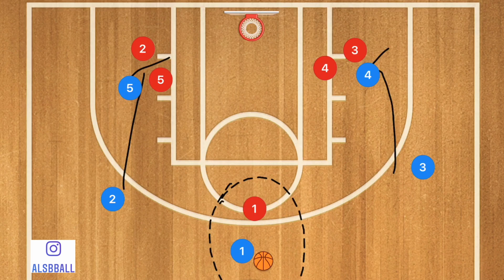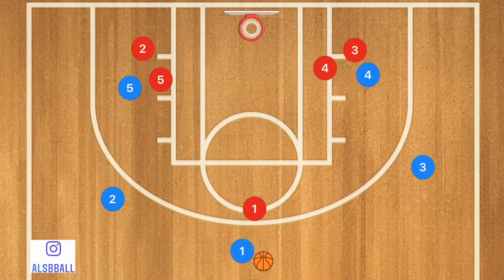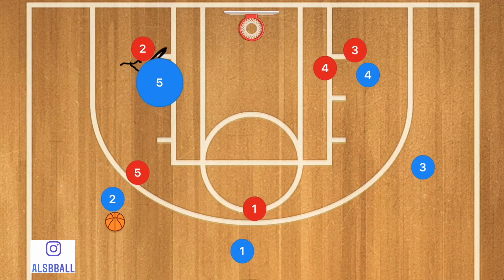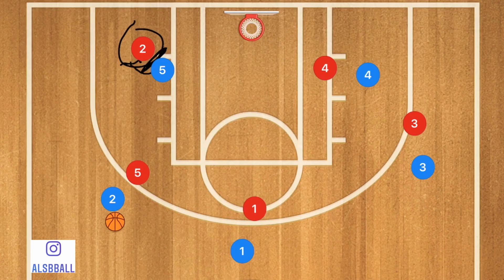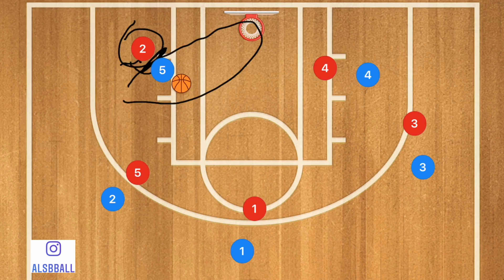The point guard needs to see if any defenders switched off. If there was a switch, I want the ball to go over towards player two, and I want to see player five, after that screen, roll and post up on player two on the inside. Player five has a height advantage and a positional advantage on player two, so player two can pass into player five for a nice easy basket.